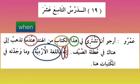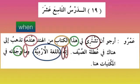Then 'ma wajadtuhu' — particle of negation — I did not find it. 'Wajada' means 'he found'; 'wajadtu' means 'I found'; 'ma wajadtuhu' means 'I did not find it'. If we understand how many words are in this — 'wajadtu' is your fi'l and fa'il, 'hu' is your maf'ulun bihi — I did not find it.